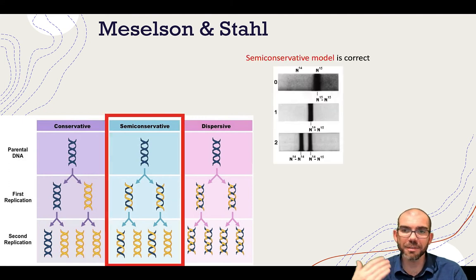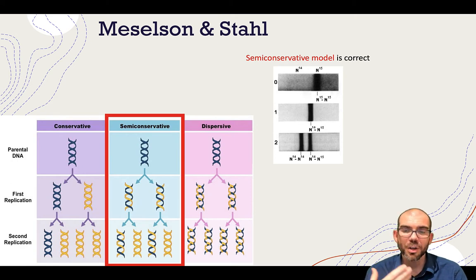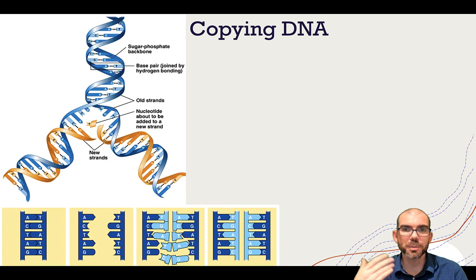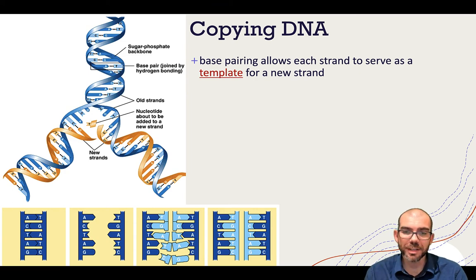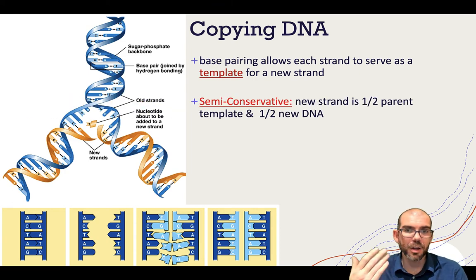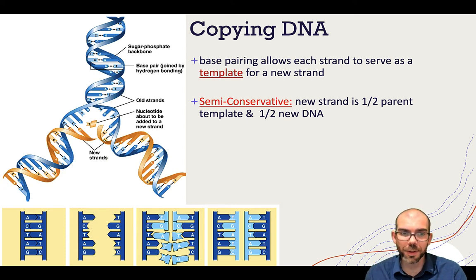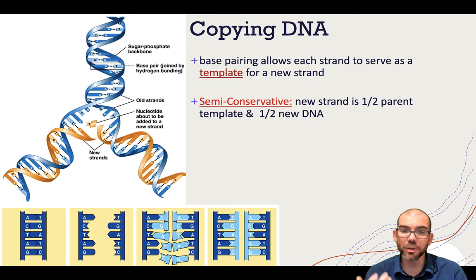Their research using heavy nitrogen isotopes showed that the semi-conservative model is the one that actually occurs in cells. When DNA is copied, we have our original parent strand, which is going to act as a template for the new strands that will be built upon them. This is a semi-conservative process. That parental strand is split open — one old strand remains (the dark blue in this diagram), and one new strand (the light blue) is built using the rules of base pairing.